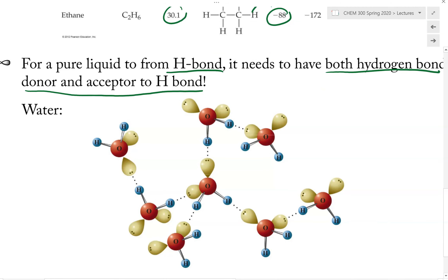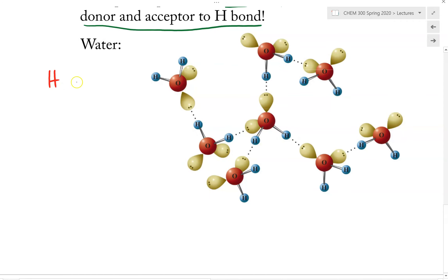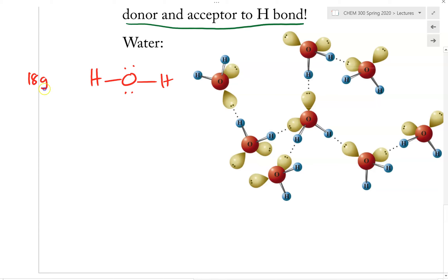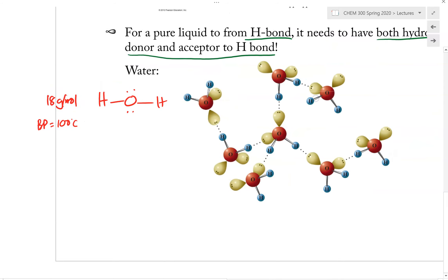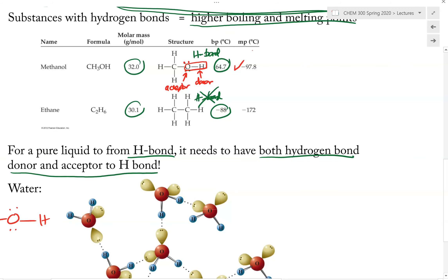Now let's take a look at another example: water. The chemical structure of water has a molar mass of only 18 grams per mole — a very small molecule. But its boiling point is 100 degrees Celsius, which is actually even higher than methanol. Methanol has a higher molar mass, methanol is polar, and both can make H-bond. So why is the boiling point of water much higher than methanol?